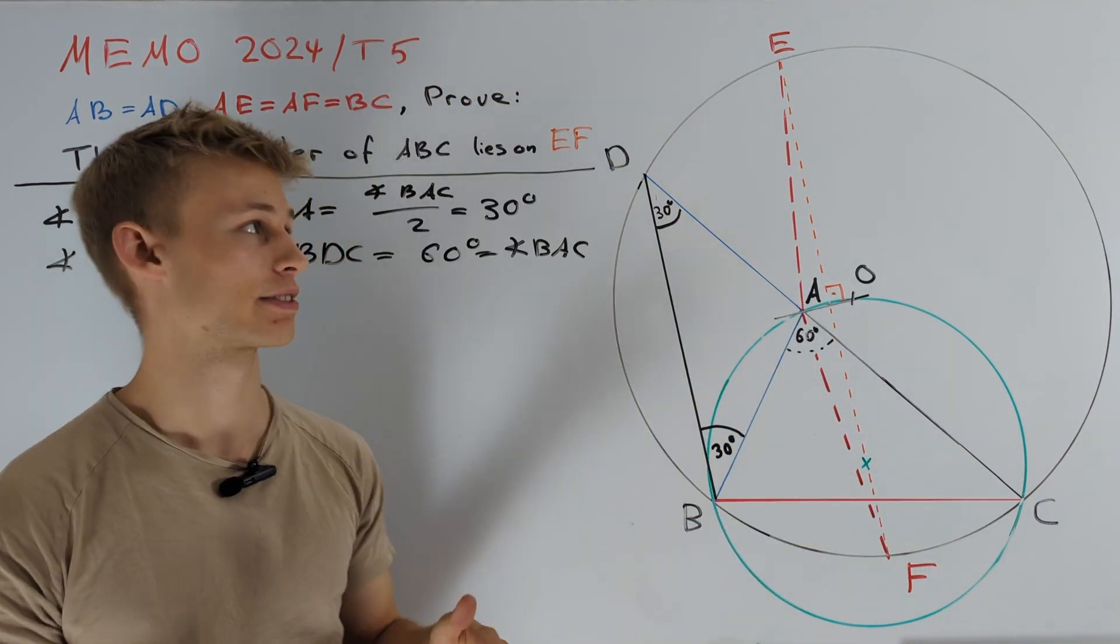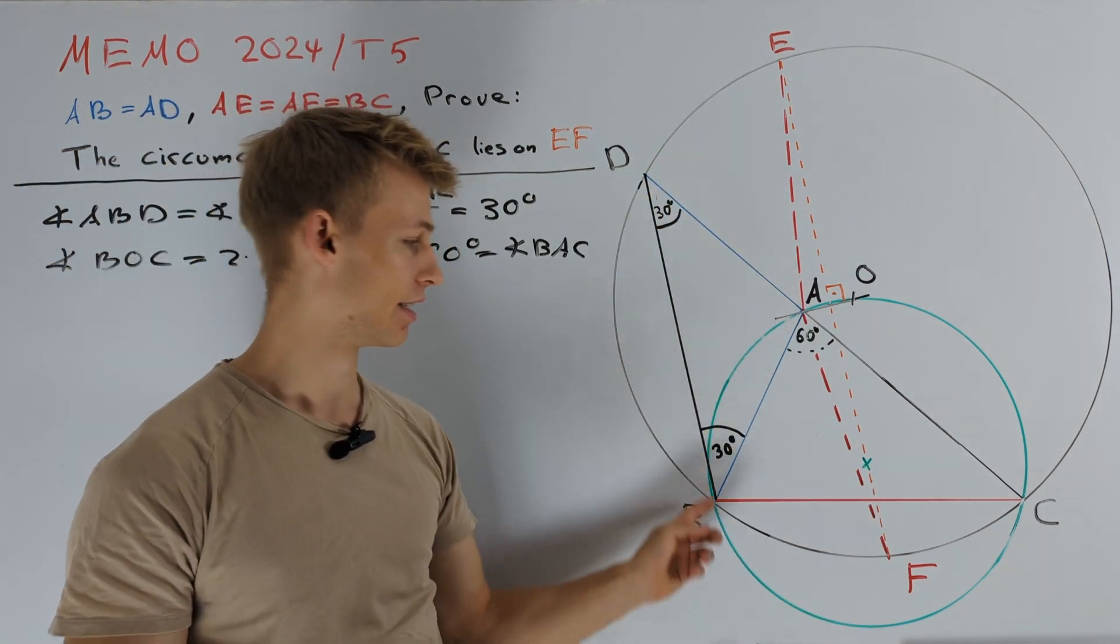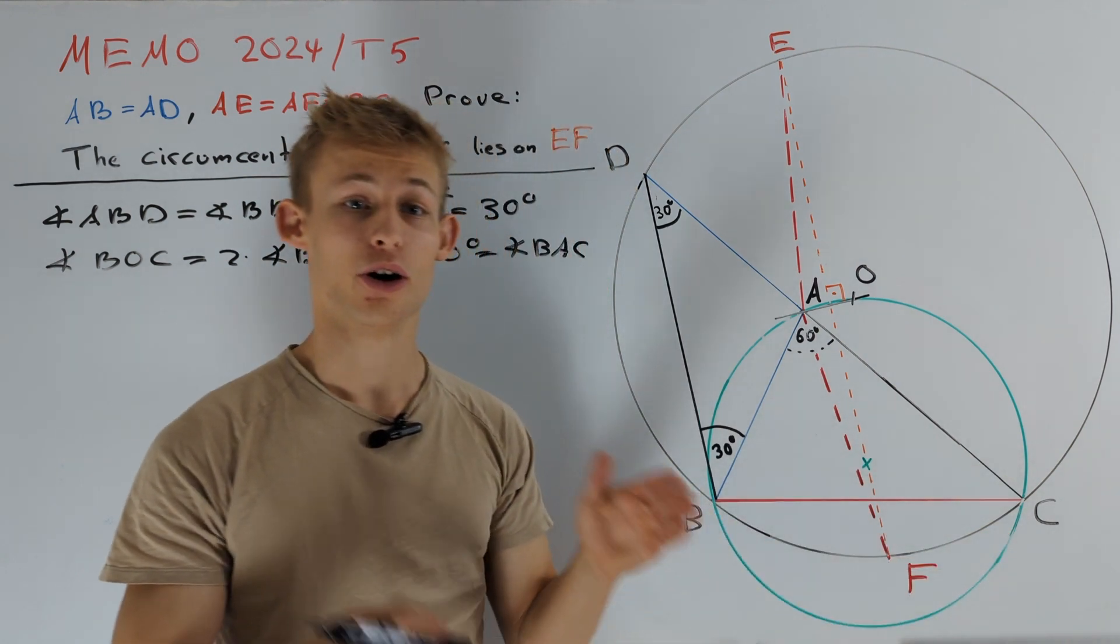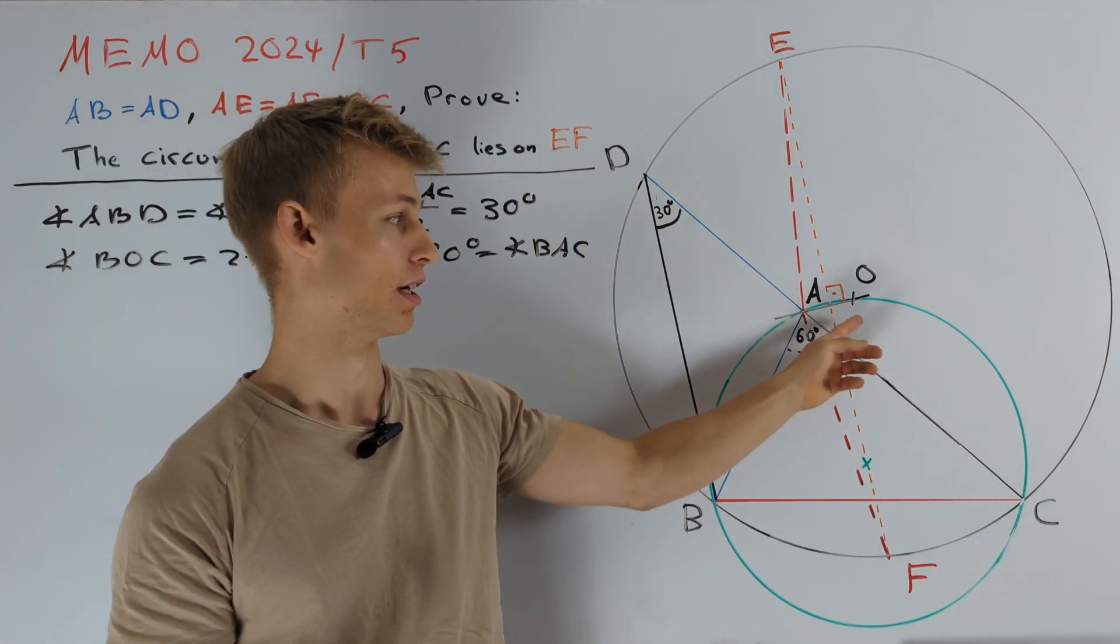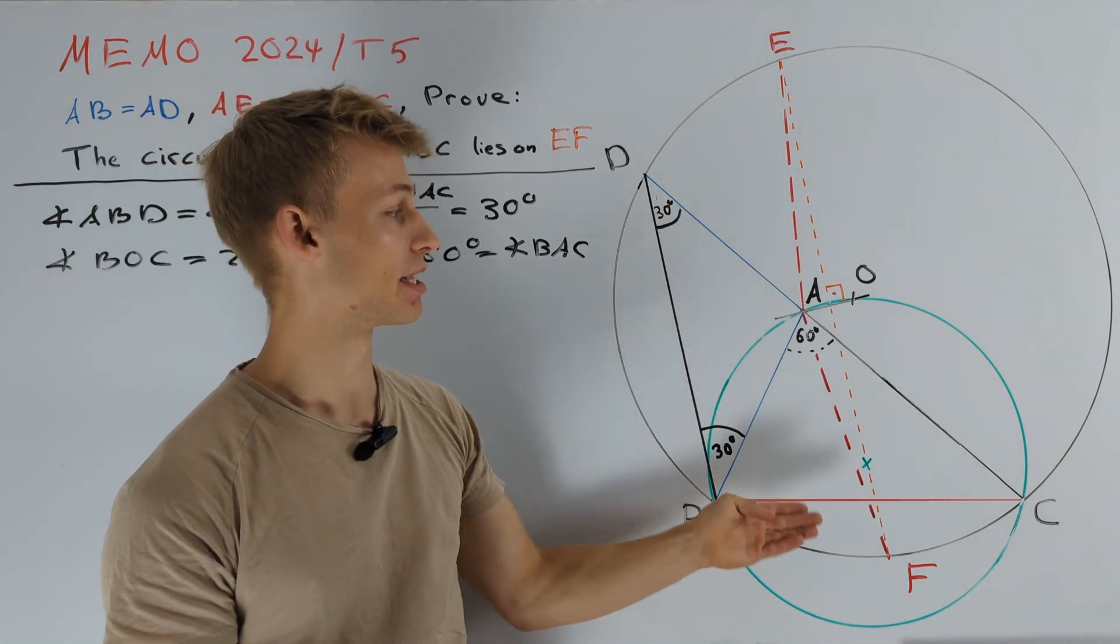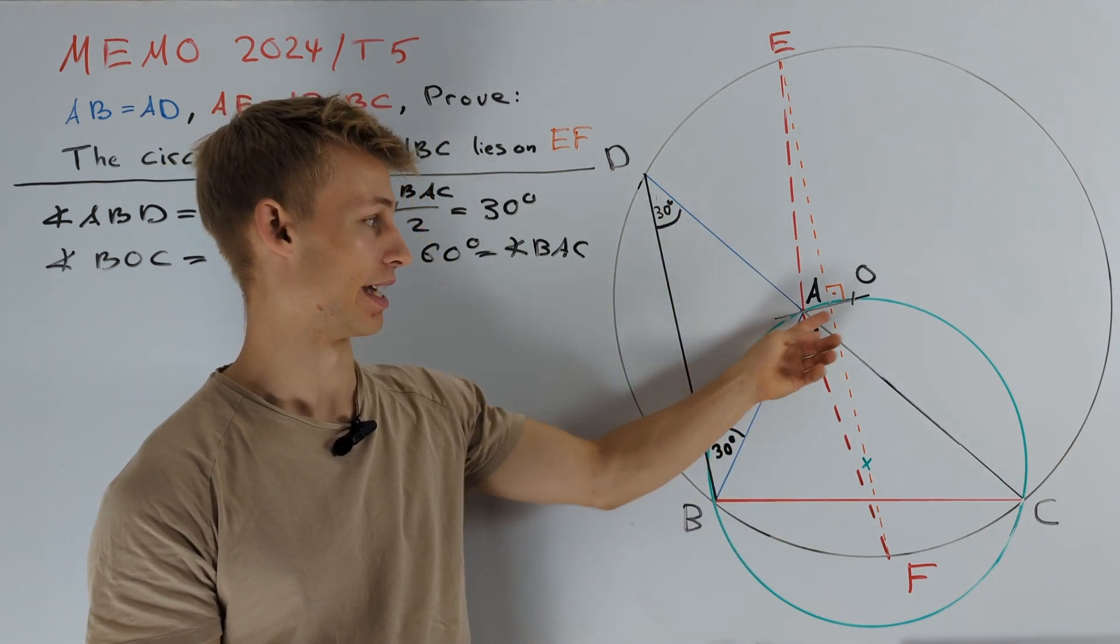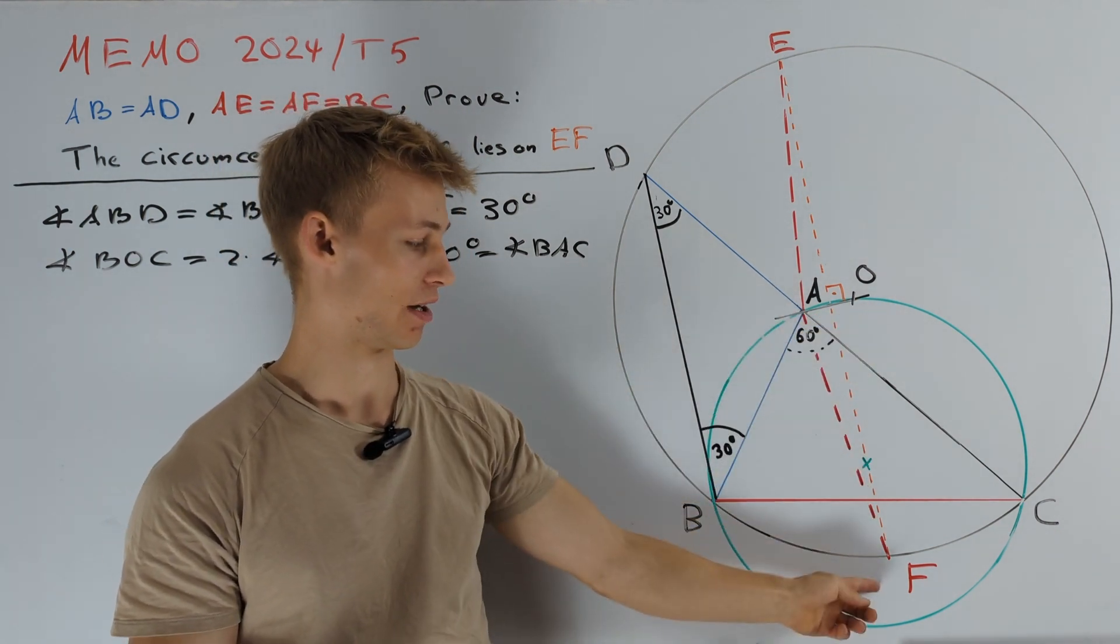Remember that our task was to prove that EF passes through the circumcenter of triangle ABC. But we already figured out that EF is perpendicular to AO. And therefore, we know that we have to prove that EF must be the perpendicular bisector of AO, or in other words that AF is equal to OF.